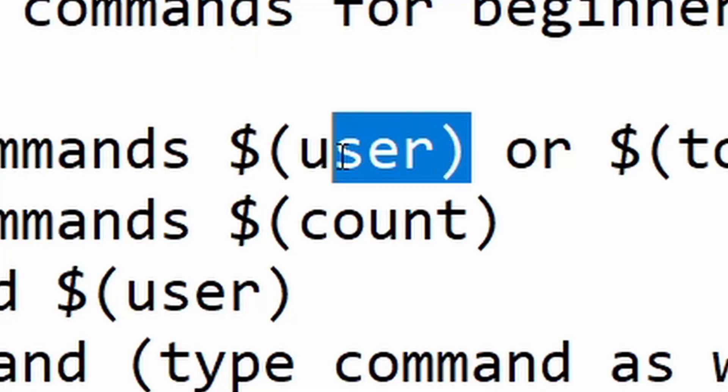The first command is a username command. Basically, this command is used if you want someone's username to end up in a command. There are two different ways to do this: either putting their username into it, or a username that they tag into the command. If you want to put their username — whoever types in the command — you're going to use dollar sign, parenthesis, user, close the parenthesis. That's how you set it so that when somebody types in the command, their username will appear.